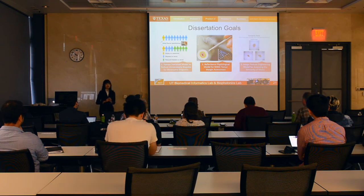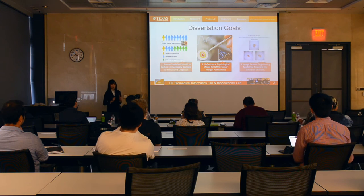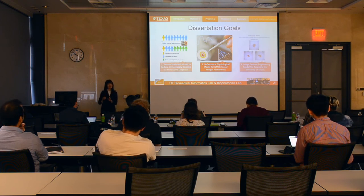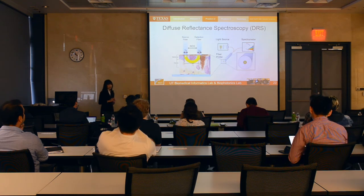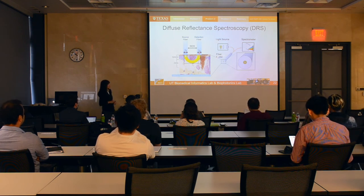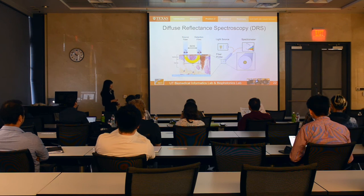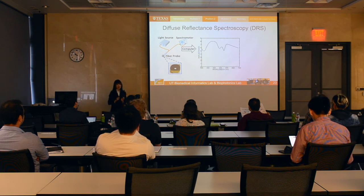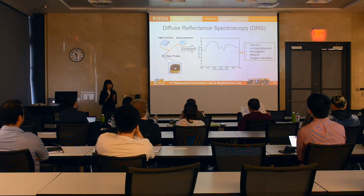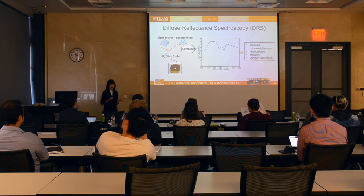Let's move to problem two. I have two parts: first, to show my physiological model works for clinical data analysis, and next, to apply it for tumor margin assessment. Since I'm using diffuse reflectance spectroscopy, let's see how it works. With a light source and a fiber probe, you can shine light on the tissue. The light undergoes scattering and absorption in the tissue, and the returned light is called diffuse reflectance. Through a spectrometer, we get the diffuse reflectance spectra — DRS. From that, we can analyze the tissue's microarchitecture, hemoglobin, melanin, and oxygenation.